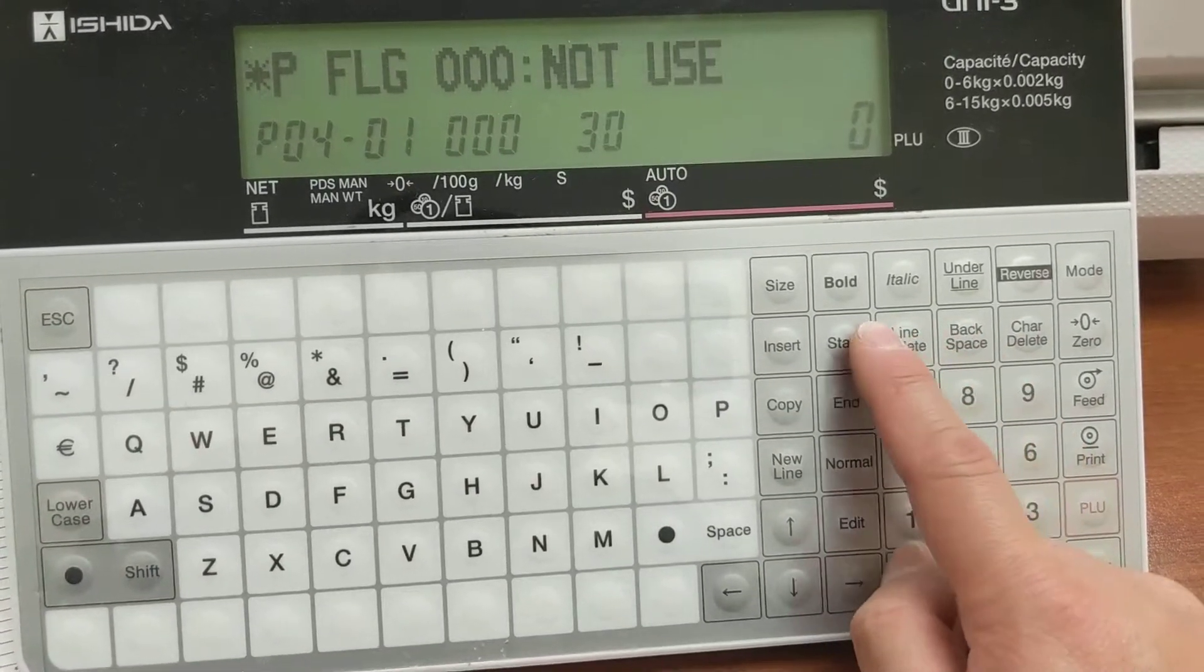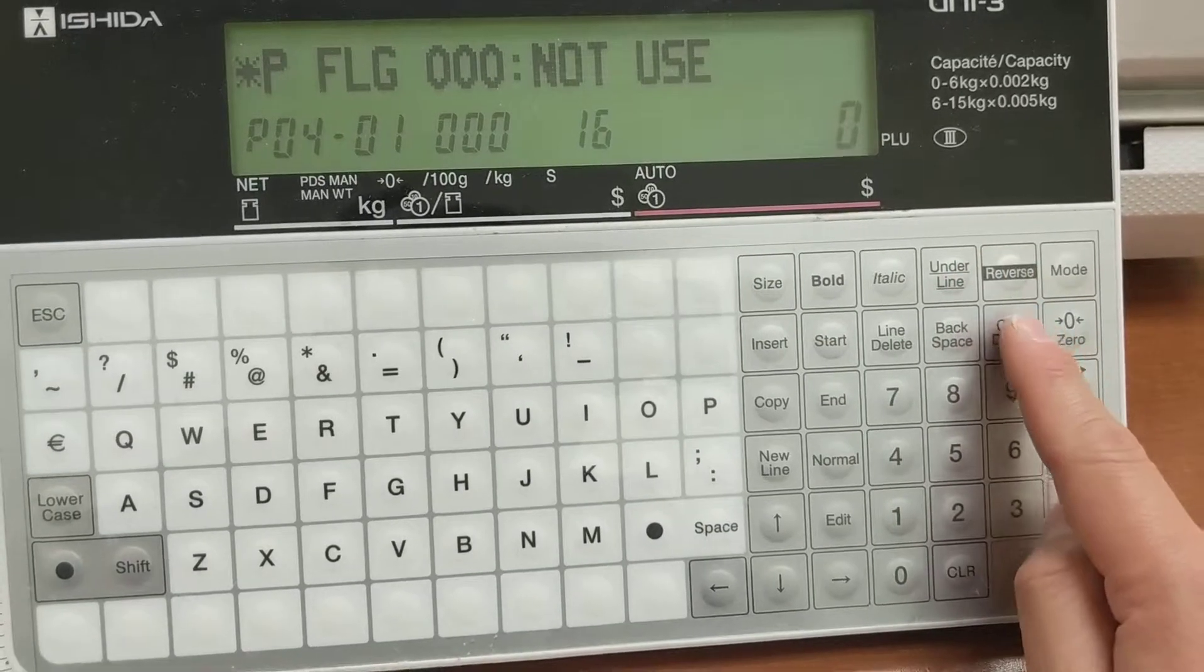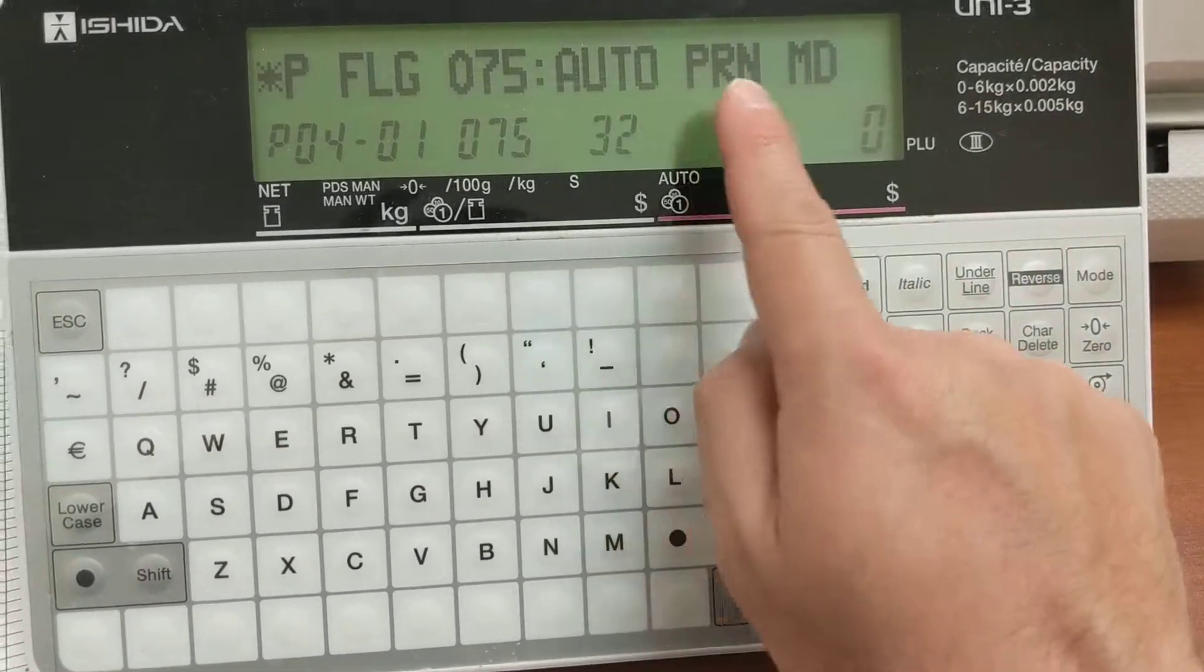So now if I toggle, see these keys have no use. There's nothing mapped to them. But then when I touch this one, it says auto print mode.